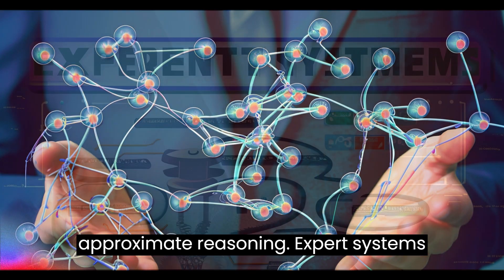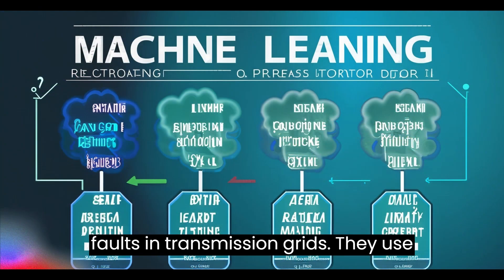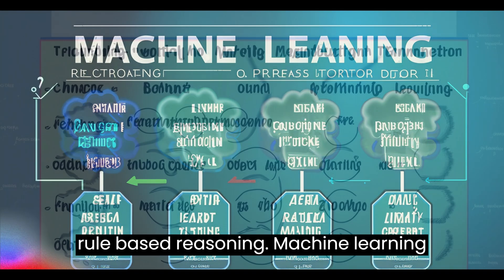Expert systems encoded with electrical engineering knowledge help monitor and diagnose faults in transmission grids. They use rule-based reasoning.